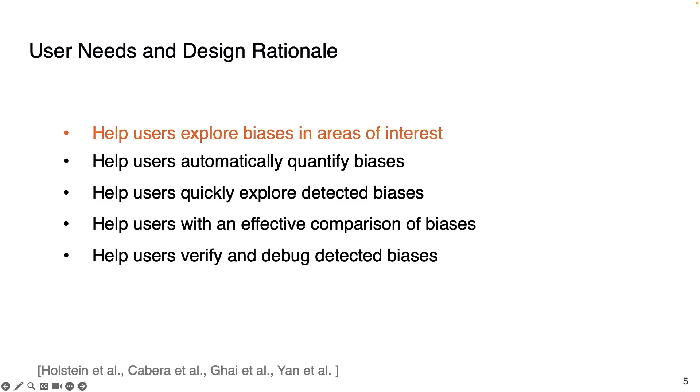A recent study finds that data scientists, machine learning developers, and practitioners wish to interactively explore biases related to a domain or area of interest. Previous bias detection techniques have shown that a tool should accurately quantify and measure bias so that a user can identify the degree and severity of that bias. Hence, quantifying bias in text corpora is an important user need.